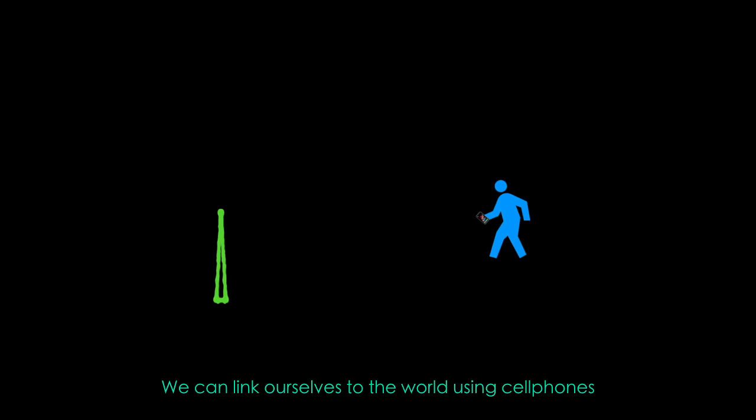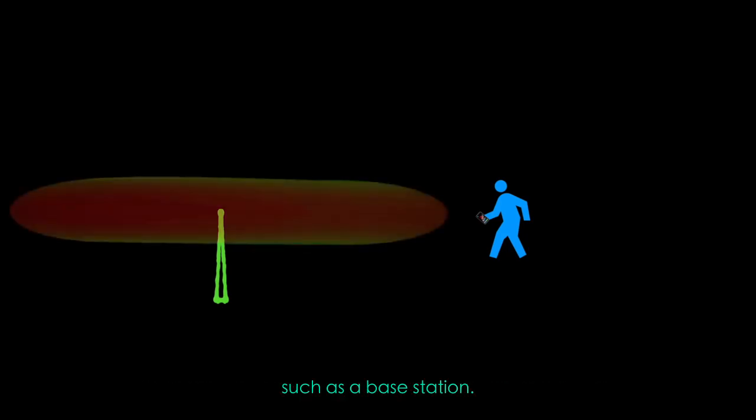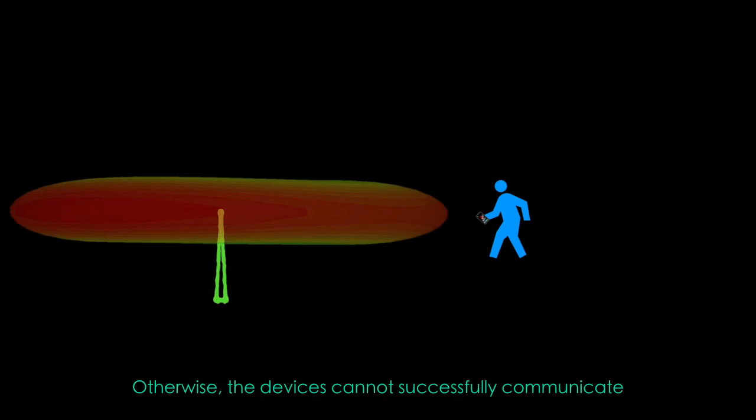We can link ourselves to the world using cell phones or other devices to receive signals from the transmitter, such as a base station. The received signals should be strong enough, otherwise the devices cannot successfully communicate with the transmitter because the noise will cover the useful signals.